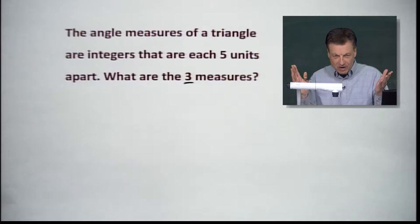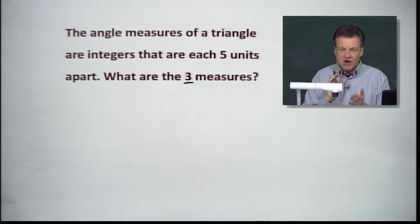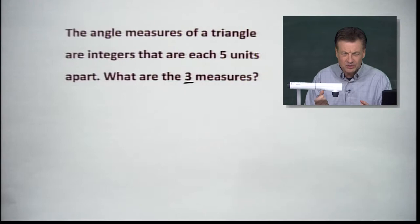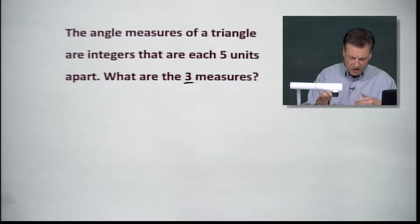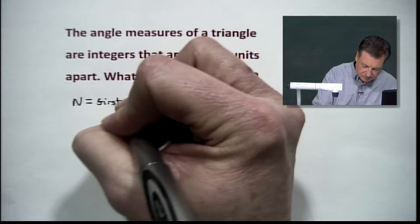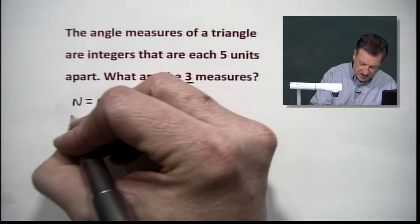And integers, as I said just a minute ago, no fractions, no decimals. These are going to come out nice and even, which we all know and love. So let's look at the three angles. Let's give them some names. How about let N be the first angle. And according to the information in our problem, the next one's five more. So we'll say N plus five equals the second angle.